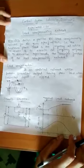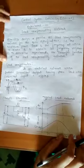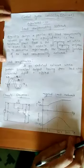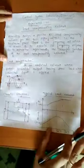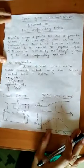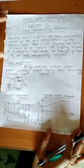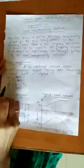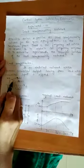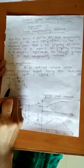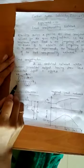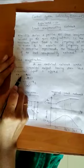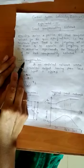Now we will see what a lead compensator is. A lead compensator is basically an electrical network which produces a sinusoidal output having a phase lead when a sinusoidal input is applied. This is the graph of a lead compensating network — the sinusoidal graph for output voltage V₀(t) and for input voltage Vᵢ(t). In a lead compensating network, the output voltage leads the input voltage, and it will have a phase difference of φ_m.